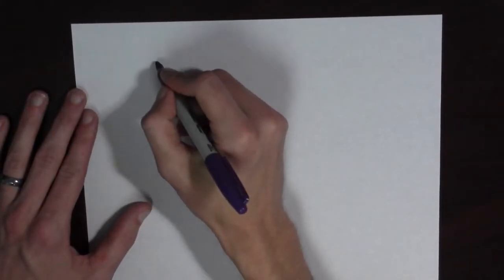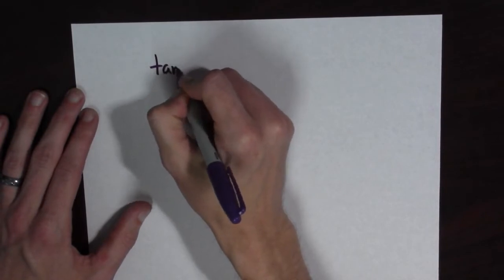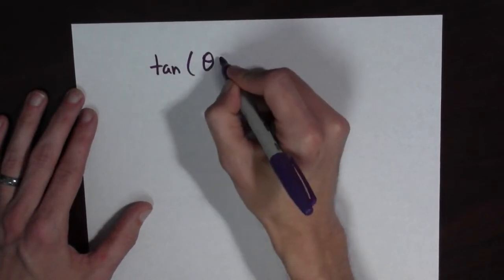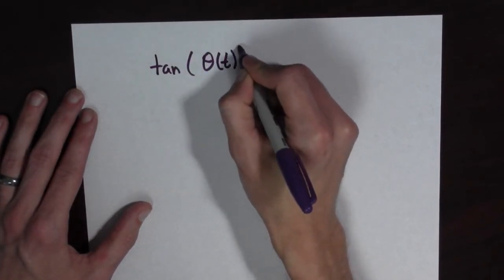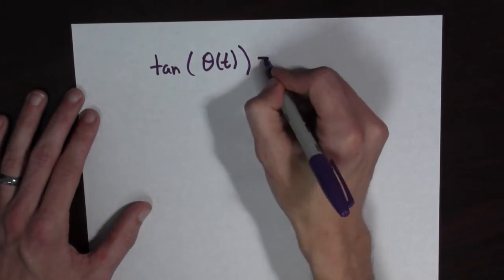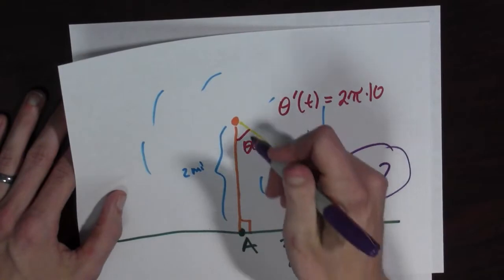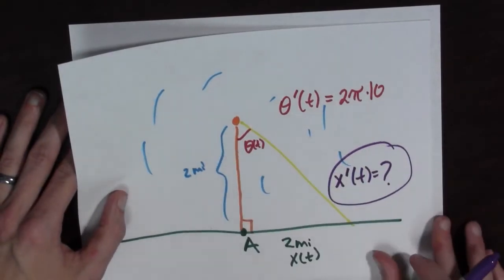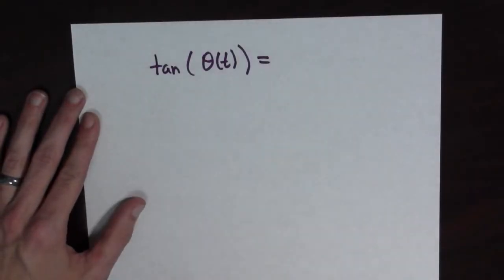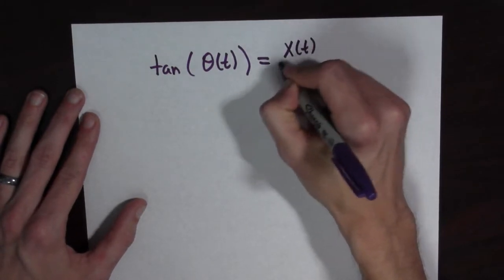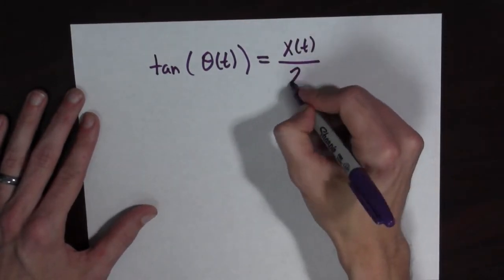and so I think what I should do is I should write the following equation here. I should write tan(θ(t)) is equal to, well let's look. What is tangent of theta of t? Well, that's opposite over adjacent. So that's going to be x(t) over 2.